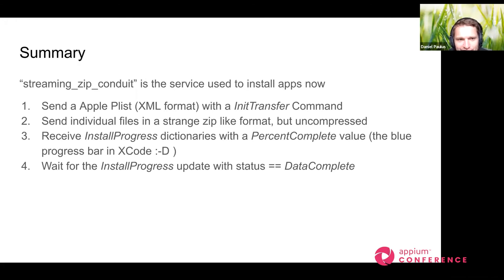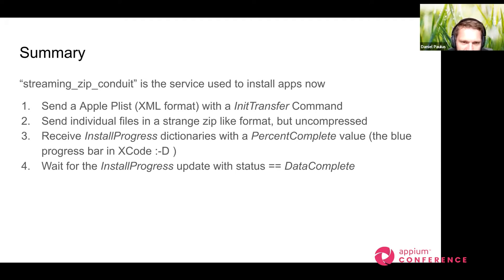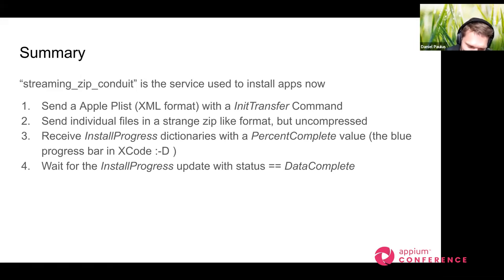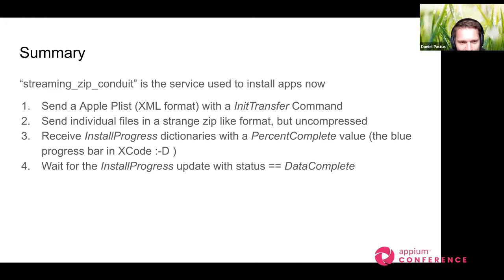Every file is sent individually — which is why Xcode knows when files are sent and when the device receives them, which feeds the progress bar. Once all the application files are sent over to the device, you receive another XML property list blob with installation progress. The phone sends back percentage values showing how far along the installation is — this ends up in the blue progress bar in Xcode. When the install progress update with status 'Complete' comes, Xcode knows the installation is done.